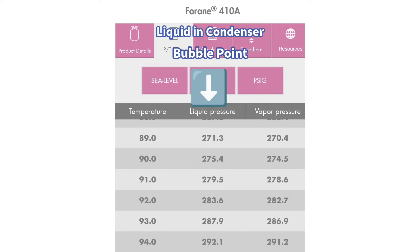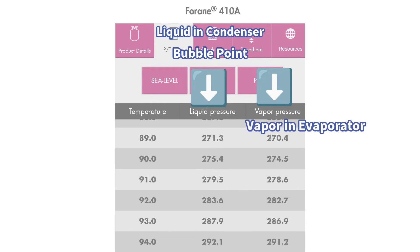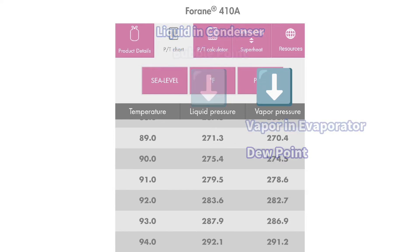In the evaporator, you're going to want to use the vapor pressure chart. A good way to remember that is that you're hoping your refrigerant is going to be in vapor form when it leaves the evaporator. Some pressure-temperature charts, instead of using vapor pressure, are going to use the term dew point. So just remember that dew point is used to calculate superheat — that little word alliteration is going to help you remember that.